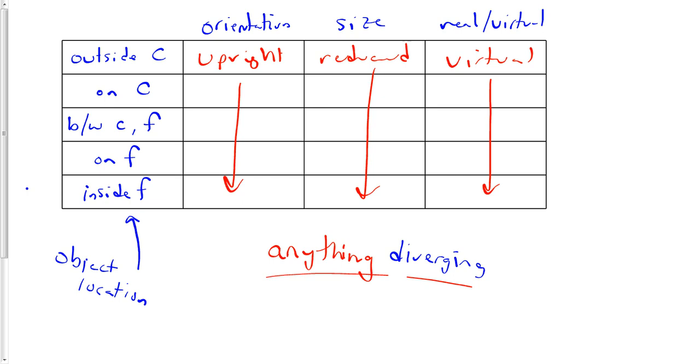So anything diverging, that's lenses and mirrors, they always look like this. They're all reduced, they're all upright, they're all virtual. So you rarely see those on the AP test because they're just kind of silly to draw. You'll get them occasionally.